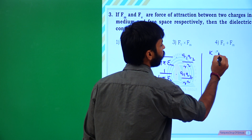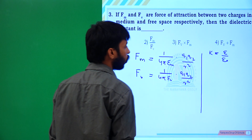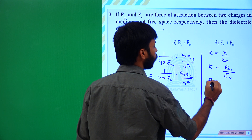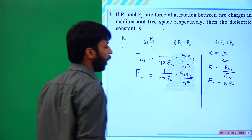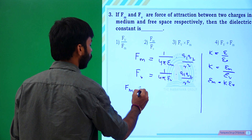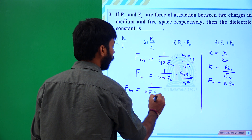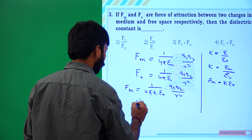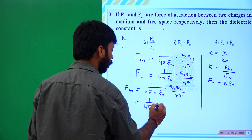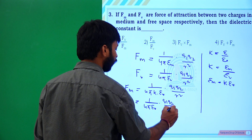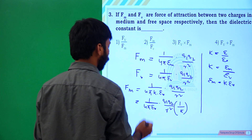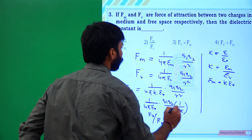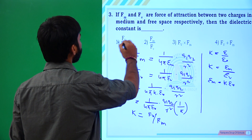We know K equals epsilon by epsilon. Here K equals epsilon_M by epsilon_V, so epsilon_M equals K·epsilon_V. Therefore Fm equals 1 over 4π·epsilon_M, substituting epsilon_M = K·epsilon_V, giving 1 over 4π·epsilon_V into Q1·Q2 over R squared, multiplied by 1/K. So Fm equals Fv divided by K, and therefore K equals Fv over Fm. The first option is correct.